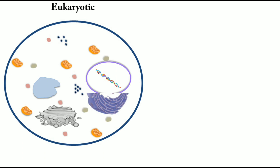Lysosomes are a special type of organelle containing different types of hydrolytic enzymes. They can degrade carbohydrates, lipids, proteins, or any type of antigen. The pH inside lysosomes is 5 to 6, lower than cytosolic pH, which helps their functioning. The centrosome is very important for cell division, helping in the formation of spindle microtubules and the spindle apparatus.